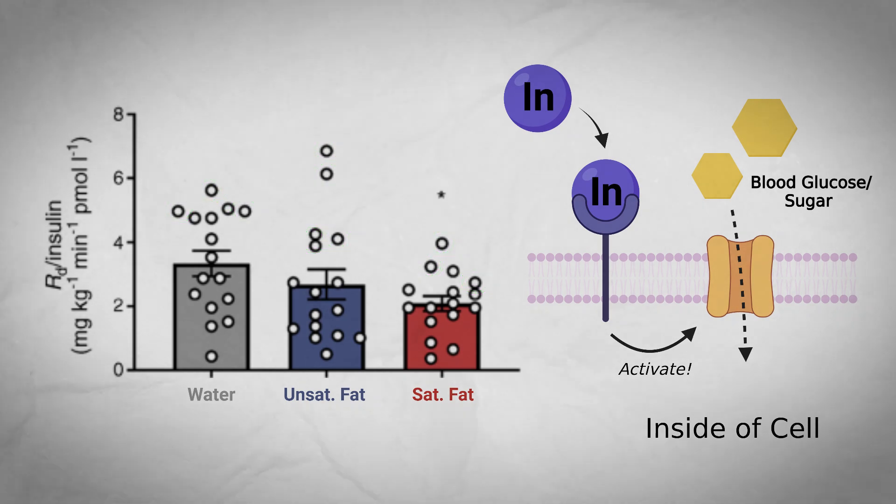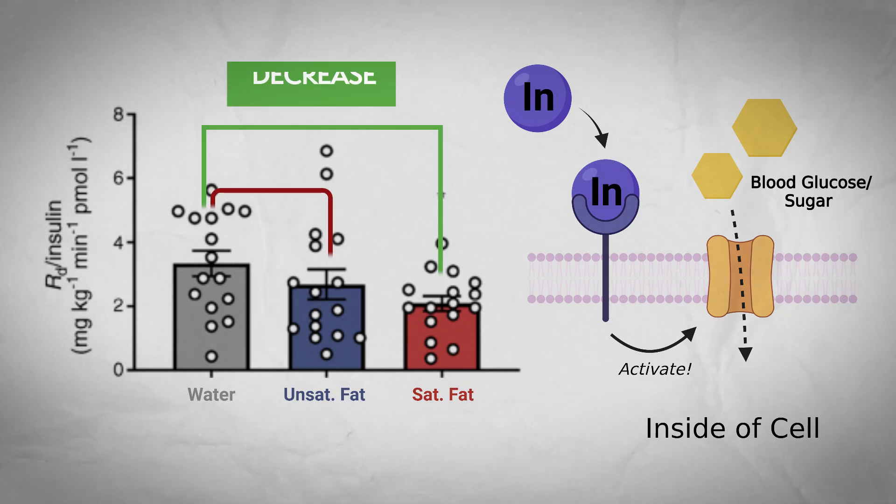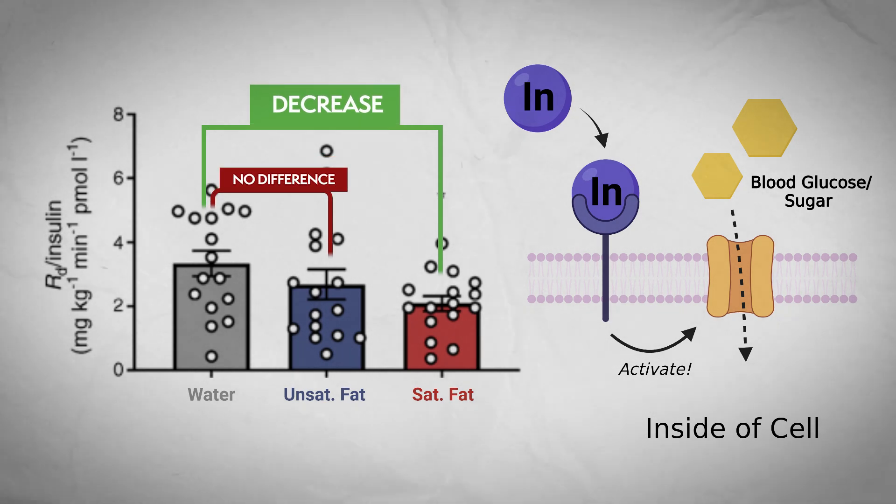Statistically speaking, taking everyone into consideration, the saturated fat fed condition was the only one that experienced reduced glucose clearance. What's cool about this study is that they also looked at several insulin signaling molecules within the cells of the body to determine where there might be some deficiencies. As much as I'd love to get into all the molecular detail, I'll have to save that for other content, otherwise the video would end up being over an hour long.